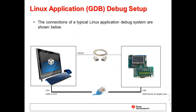Now let's take a look at another simplified graphical representation of the Linux application debug environment, this one showing the typical connections of the environment. We have a host machine running GDB on the left, from an IDE, and a target running a Linux application on the right. A serial communication between the host and target is used to issue commands to the running application, and an Ethernet connection between the host and the target is used for communication between GDB and GDB server.